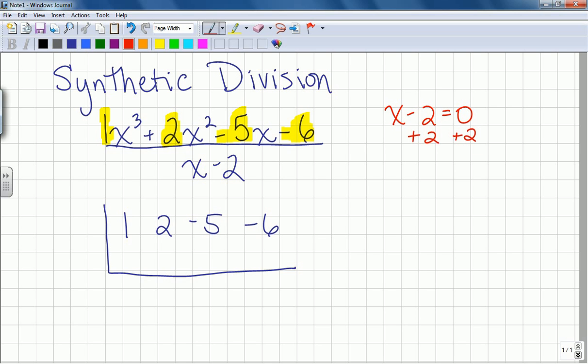I add 2 to both sides. It cancels that on the left, x equals 2. Perfect. So I'm going to have a 2 on the outside here. So I've set up my problem. I've pulled my coefficients from the numerator. Those went inside. Took my denominator over here, I set it equal to 0 and solved, and that's the number that goes on the outside.